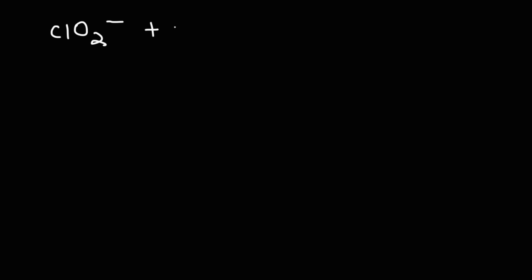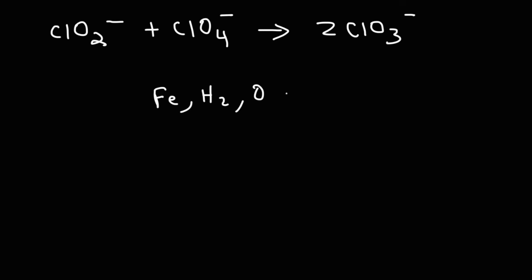Now let's try a harder example. The chlorite ion reacts with the perchlorate ion to produce two chlorate ions. To review some rules: any pure element has an oxidation state of zero. Fluorine is always minus one except in its pure elemental state (F₂), where it is zero. Oxygen is always negative two except when bonded to fluorine or in its pure elemental state. There are exceptions like peroxides and superoxides. When hydrogen is bonded to a nonmetal, its oxidation state is plus one; when bonded to a metal as a hydride, it is minus one.